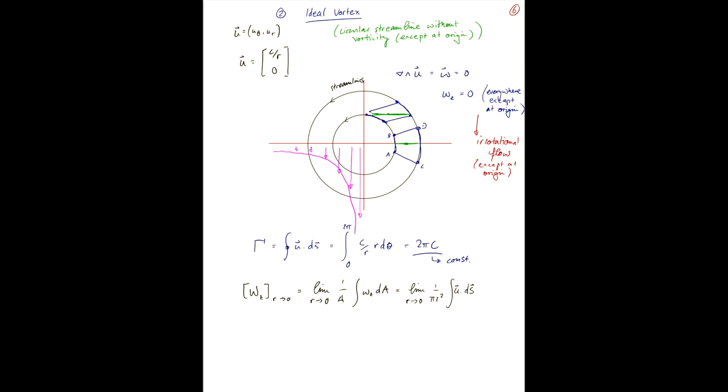And u dot ds, we just calculated as 2 pi c. So it really is just the limit as r goes to 0 of 2 c, the pi cancels, over r squared. So that's why we know that at the origin here, our vorticity goes to infinity.